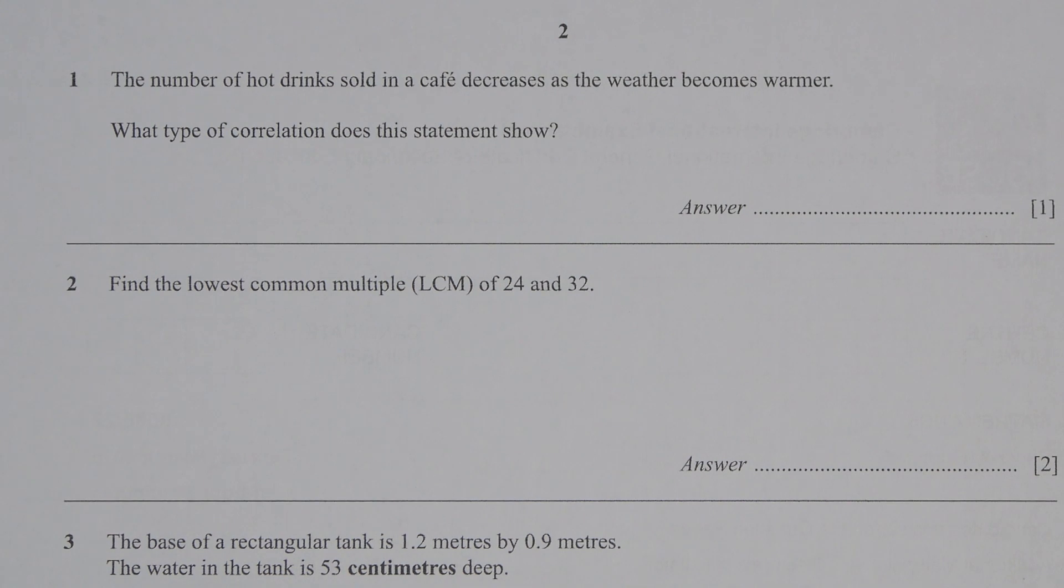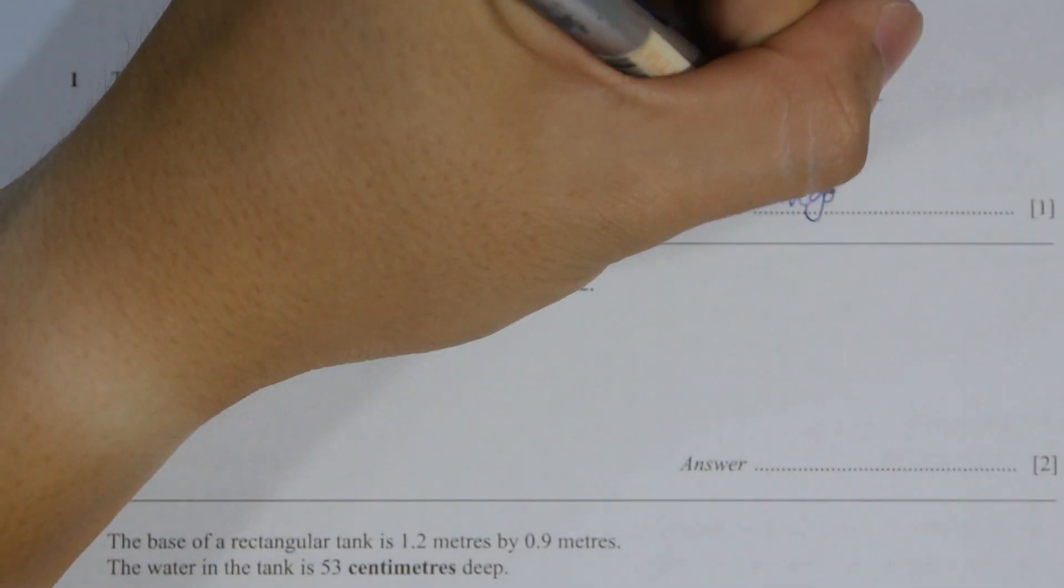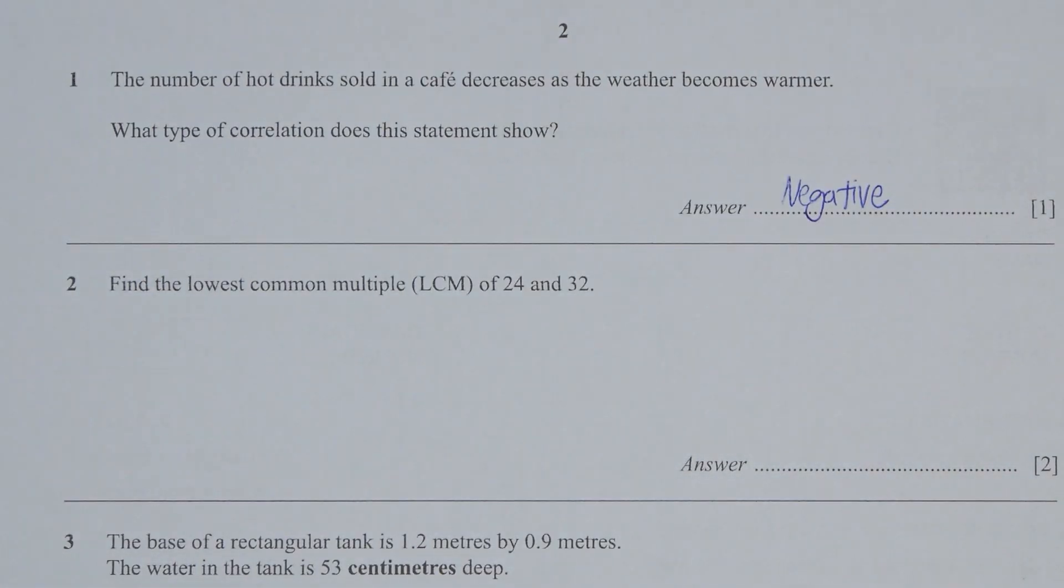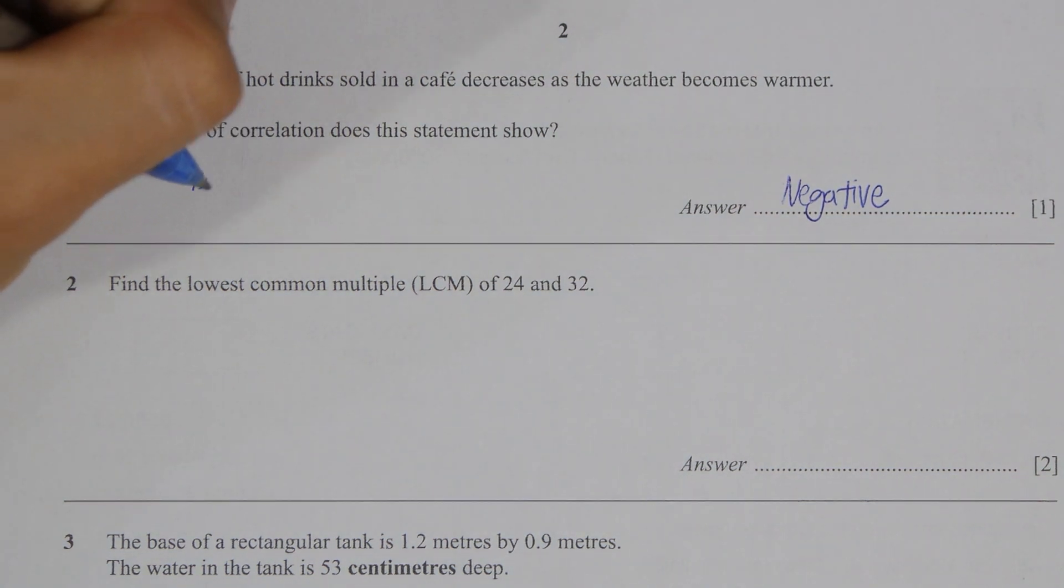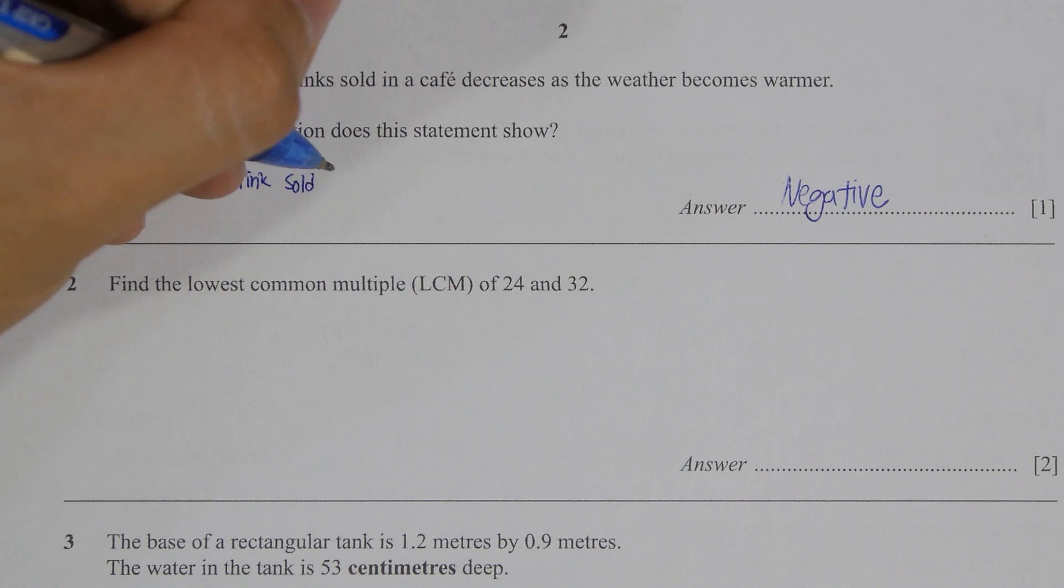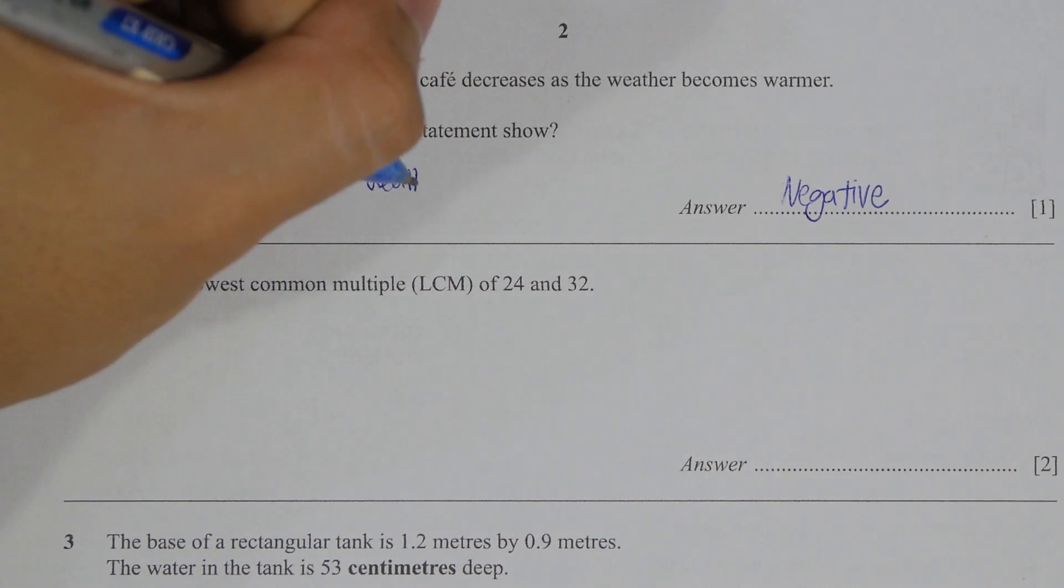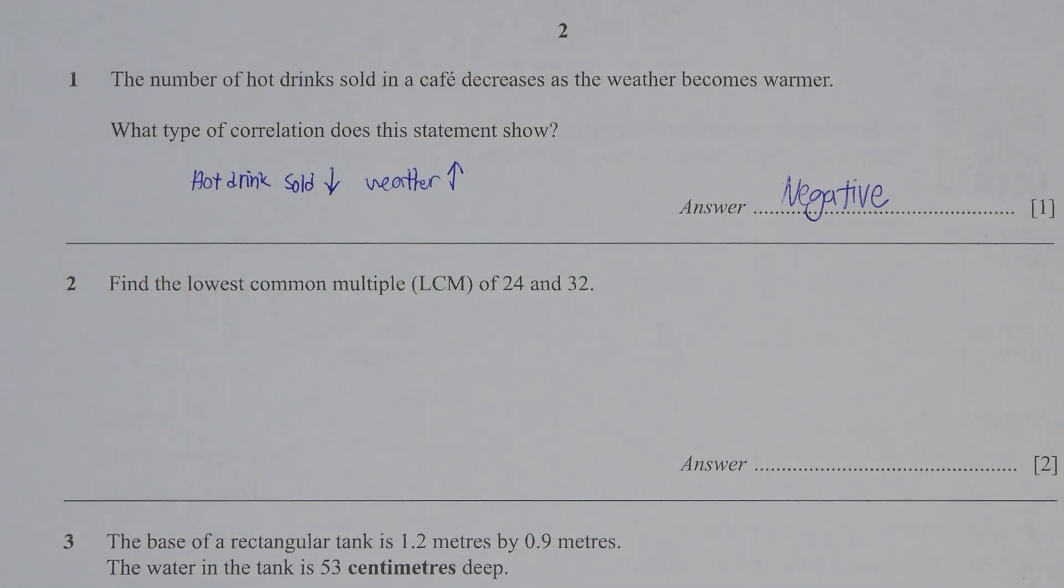For the first question, the key thing you need to identify is that the hot drink sales volume decreases when the weather temperature increases. So this is actually a negative correlation.